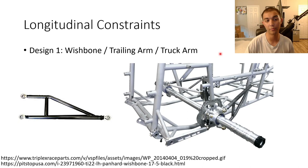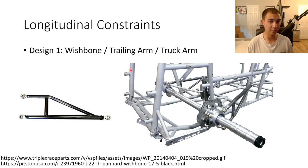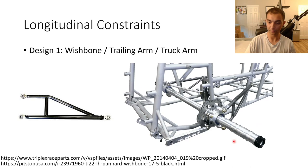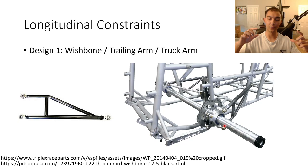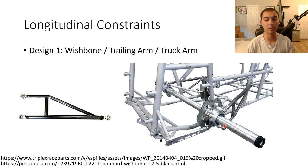Longitudinally — forward and backward in the car — the first design used to constrain the axle is the wishbone design. I personally look at it more like a trailing arm or truck arm, but in dirt racing it's called a wishbone. There's one pickup point that acts as the instant center for its rotation, and the other two points locate on the bird cages. You need those pickup points or the bird cage is able to move forward and backward, which is why there's a wishbone on each side of the car.